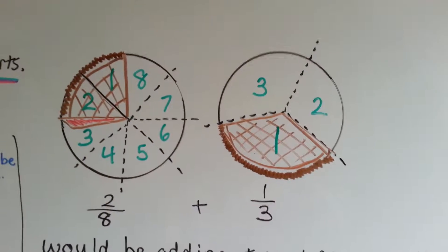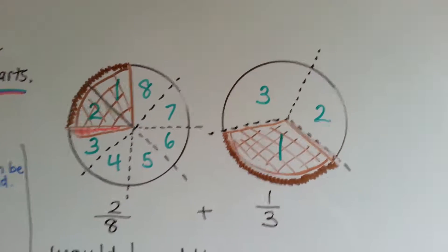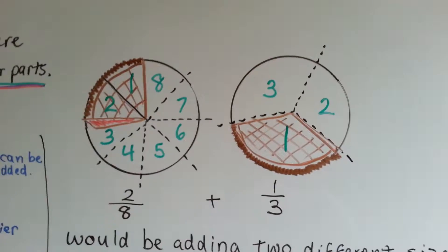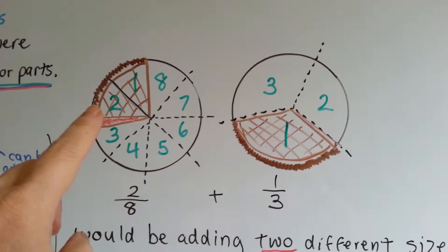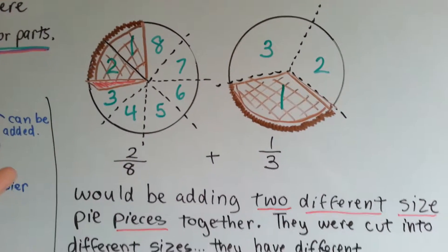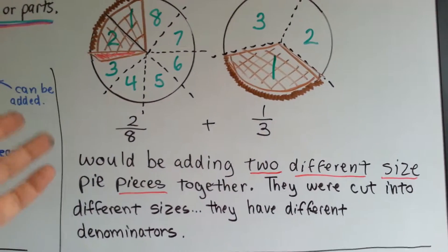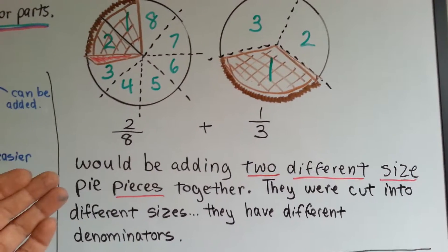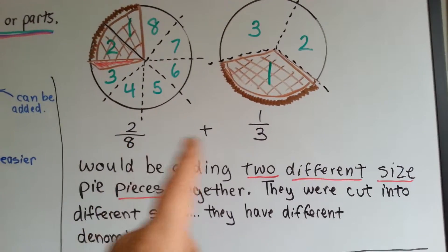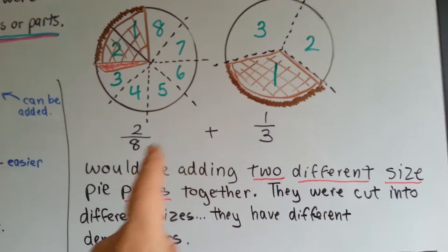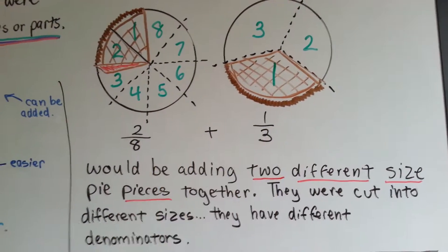Now, if we have two pies that are cut into different sizes. This one was cut into thirds, this one was cut into eighths. Two-eighths plus one-third would be adding two different sized pie pieces together. They were cut into different sizes. They have different denominators. The denominator tells you the size of the piece.